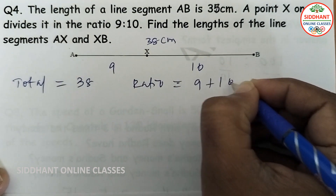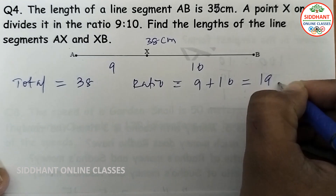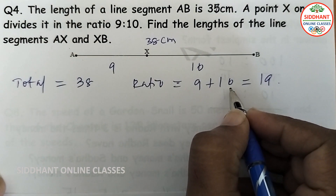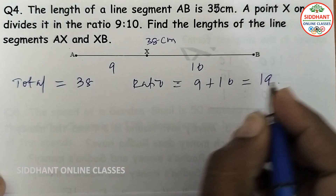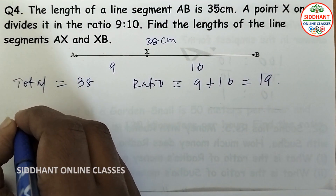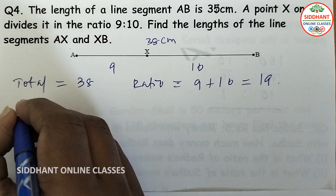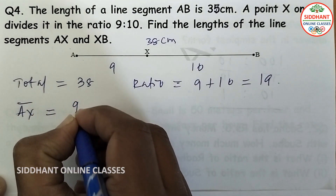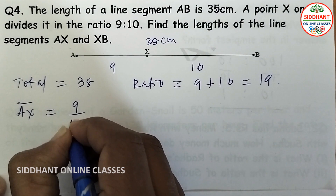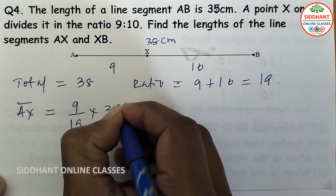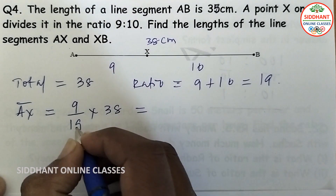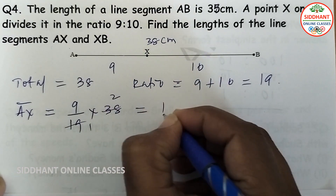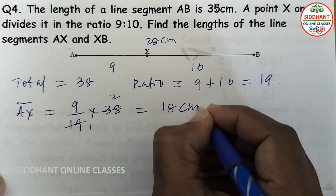The total is 19 parts — one segment is 9 parts and another is 10 parts. Line segment AX is 9 parts by total 19 parts, multiplied by 38 cm. So 38 divided by 19 equals 2, and 2 into 9 gives 18 cm.